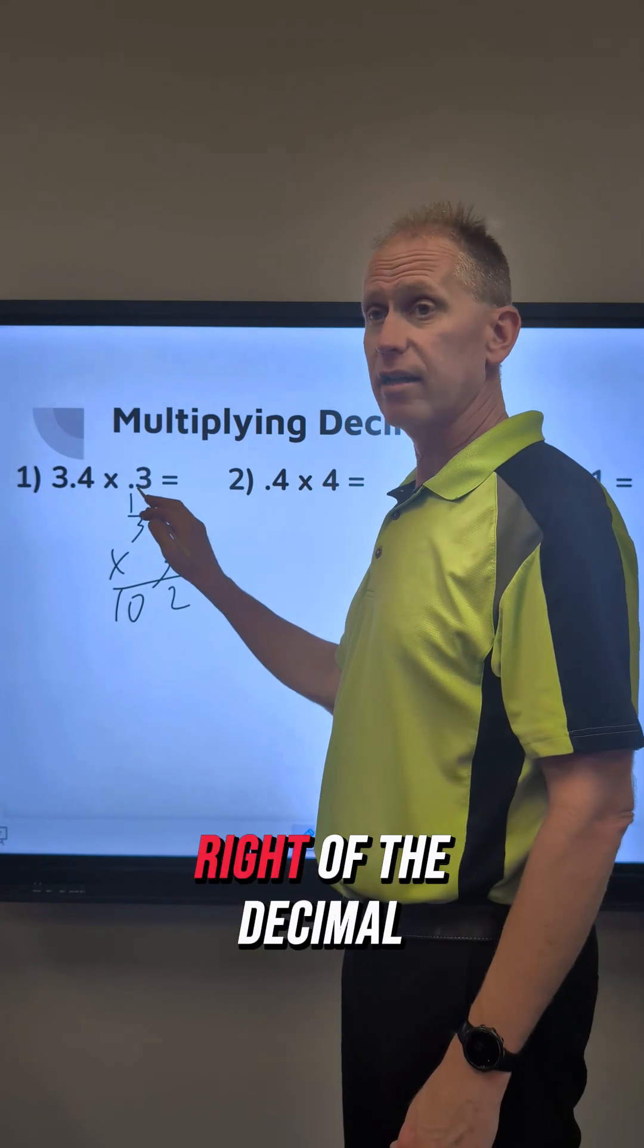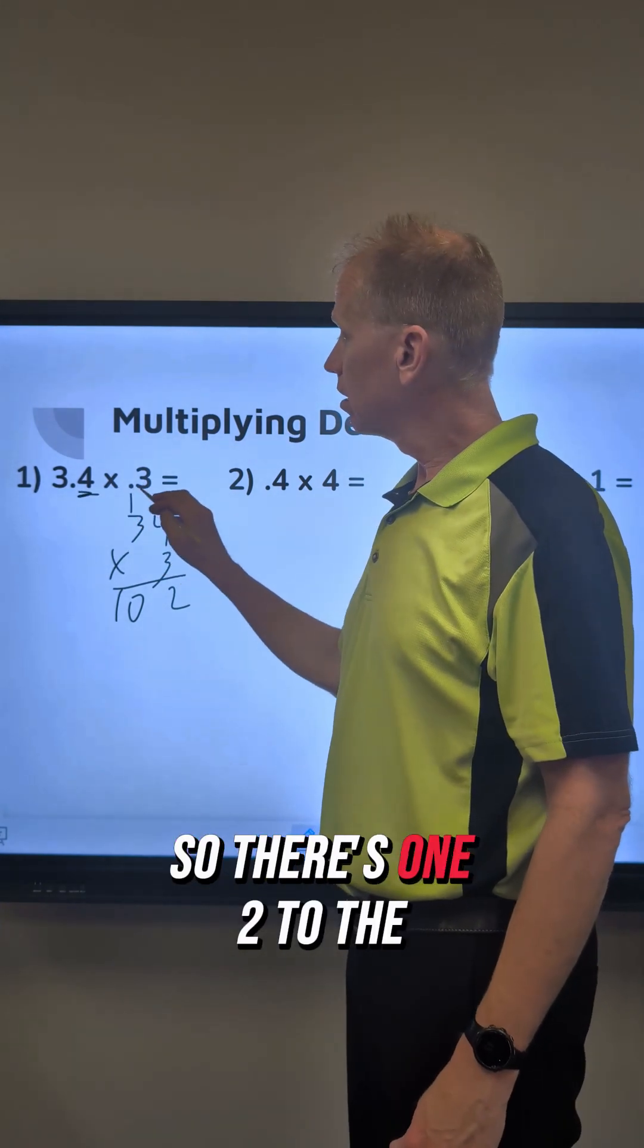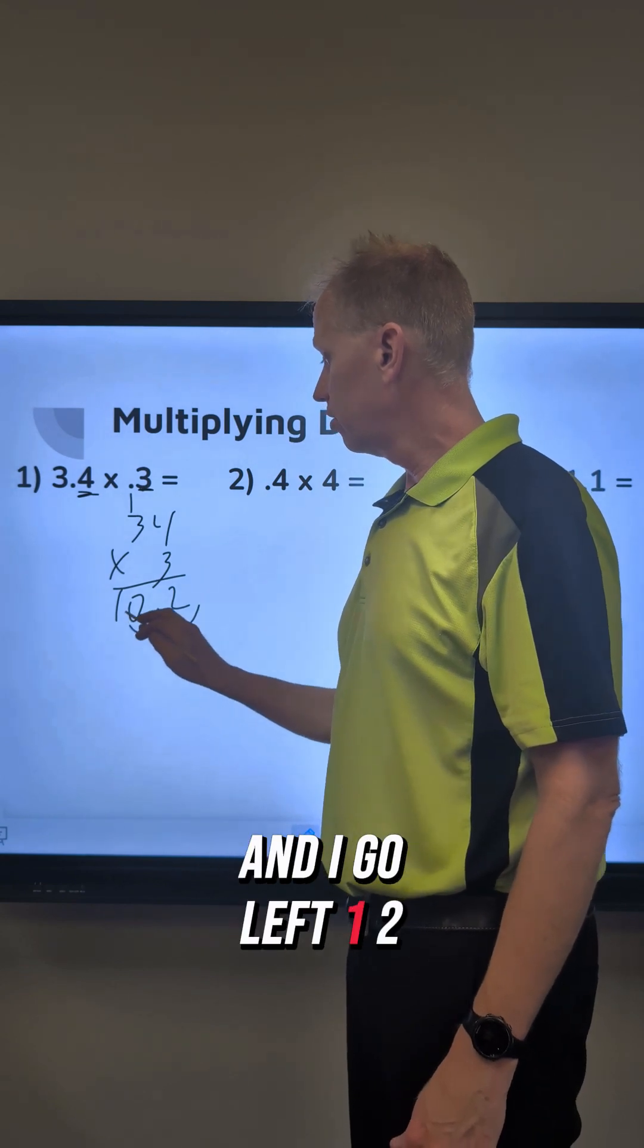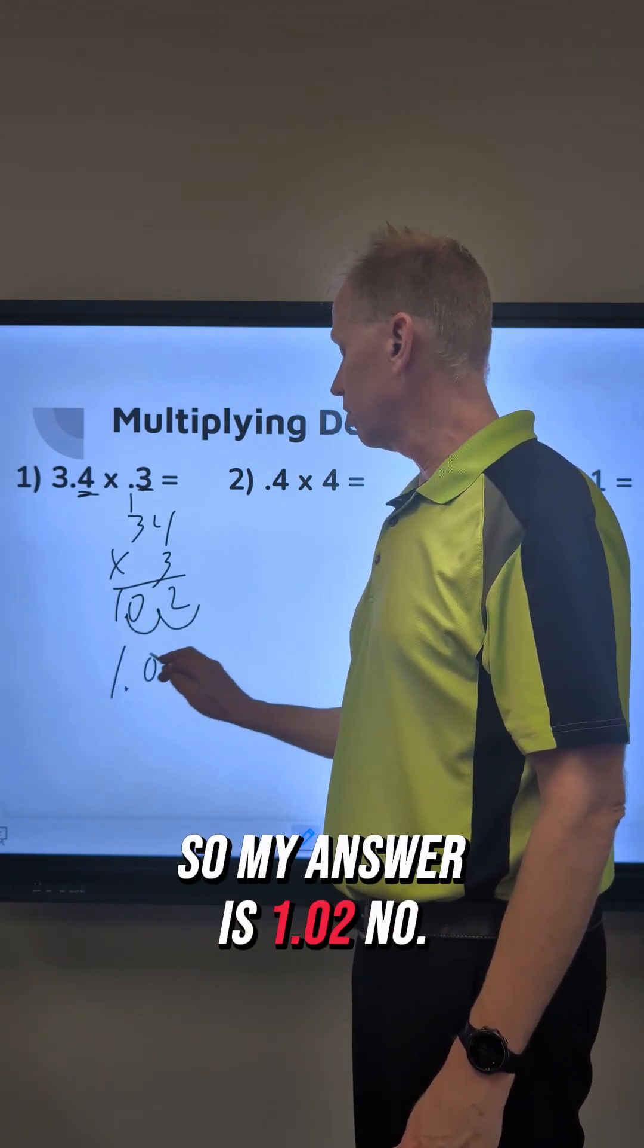Then I move the decimal, the number of numbers to the right of the decimal. So there's 1, 2 to the right in the original problem. So I start at the right and I go left. 1, 2. So my answer is 1.02.